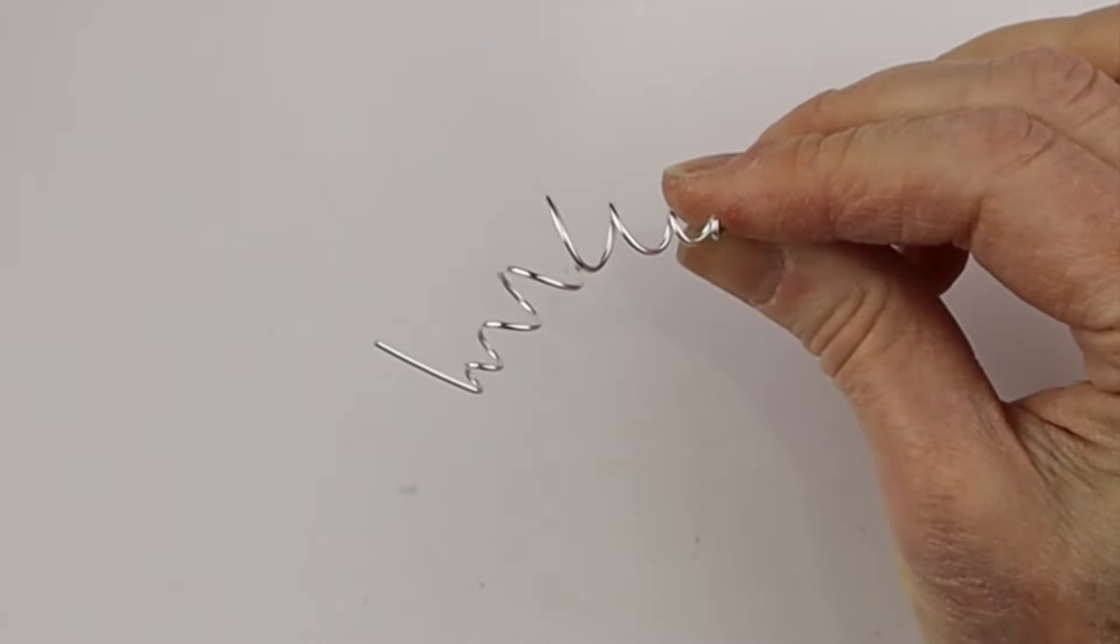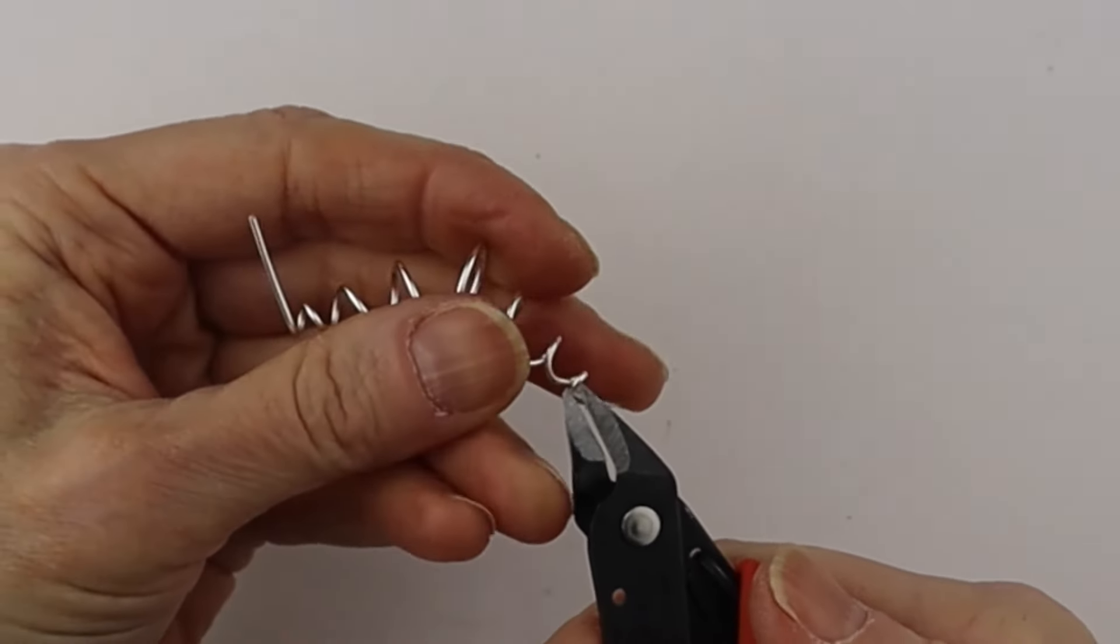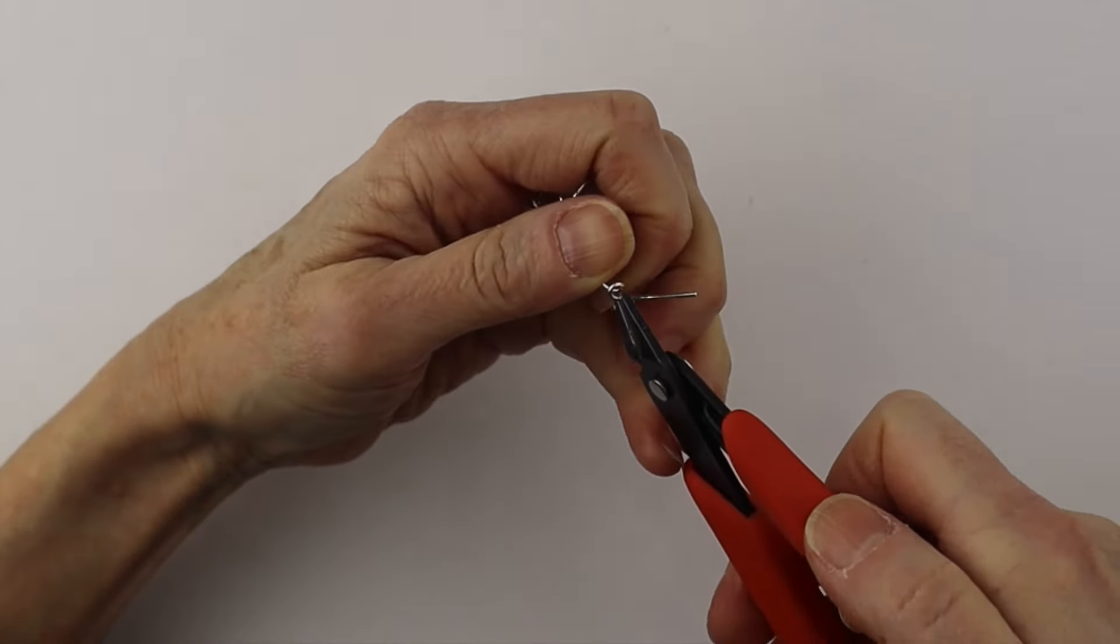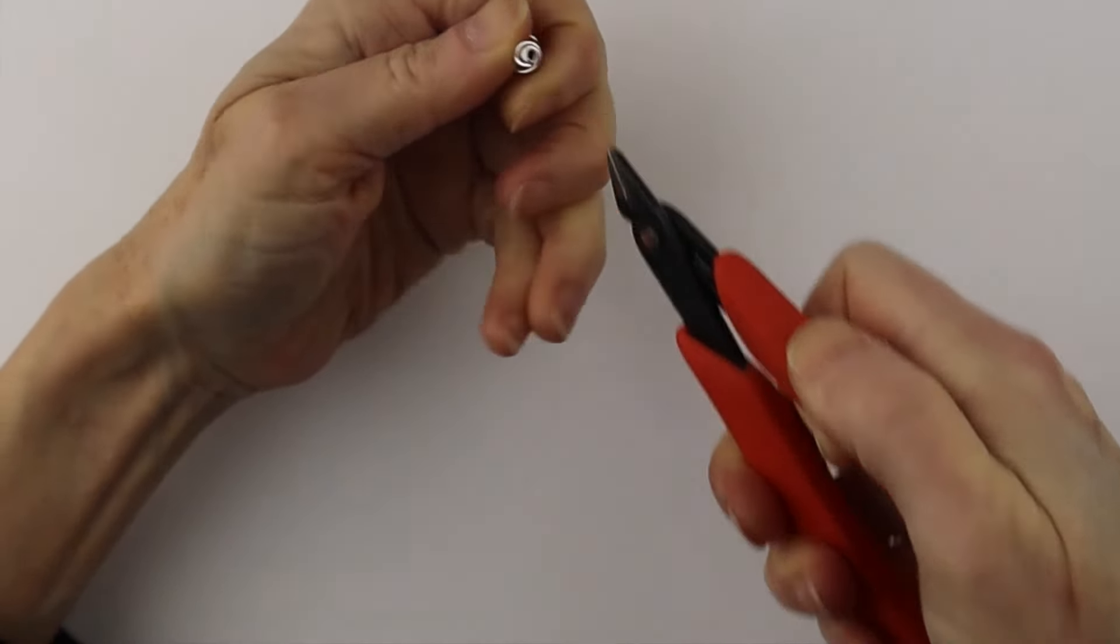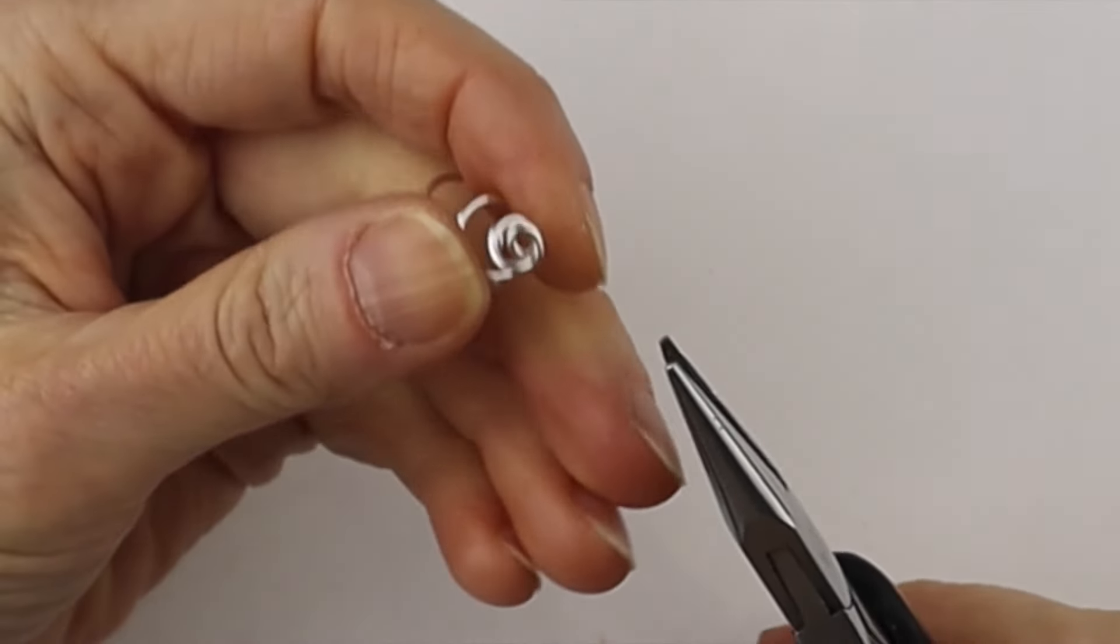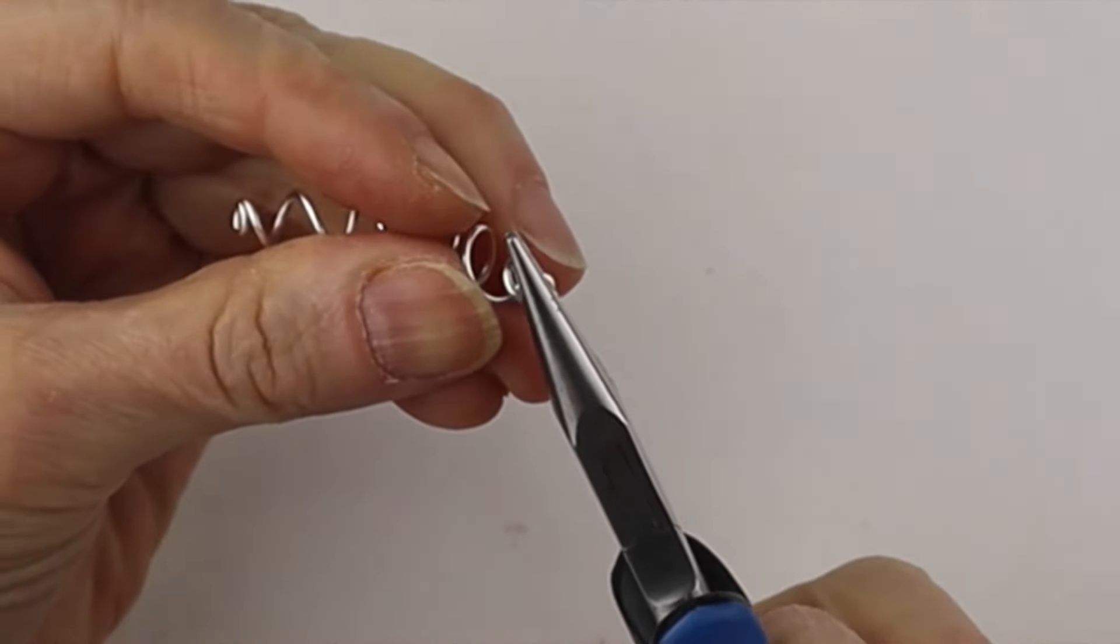You have this configuration, and we're going to clip the ends flush. Give it a clip on each end with your flush cutters, then take your flat pliers and pinch it in so there's no pokey ends.